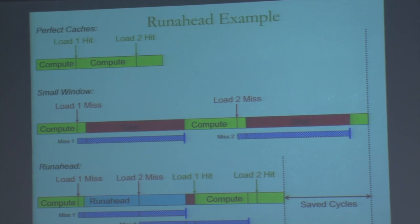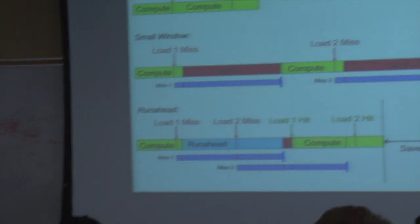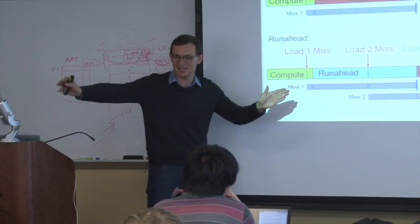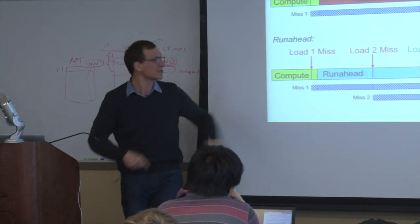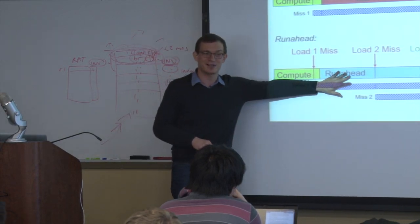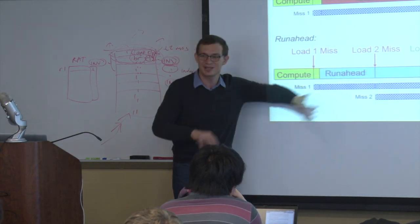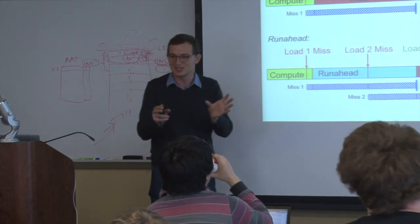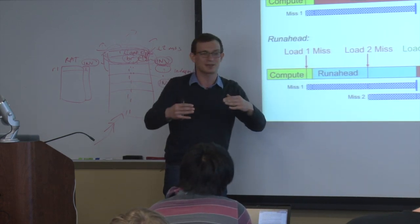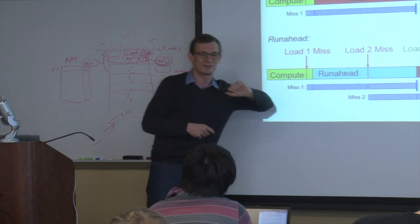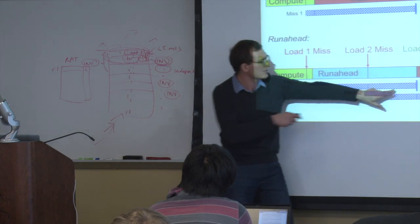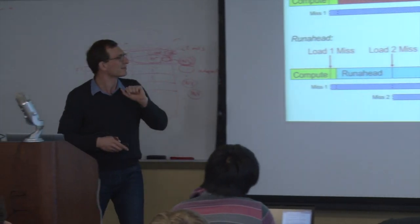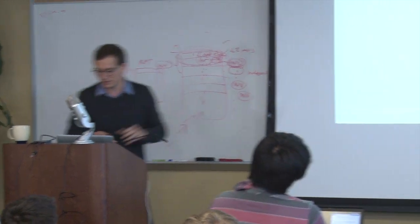This is somewhat like slipstreaming within a single context — you checkpoint the architectural state, run ahead, and go back. You could do this with a separate thread context, and IBM Power 6 actually did that. They had a two-way processor with two thread contexts: when a long latency cache miss occurs, they launch another thread in the second context to do exactly this. The benefit is you don't need to flush the pipeline at the end. The upside of run-ahead's single-context approach is you don't need another thread context.